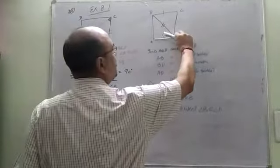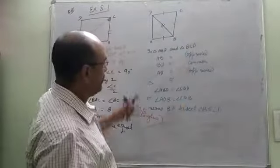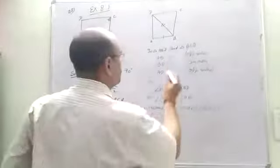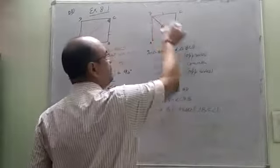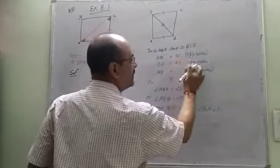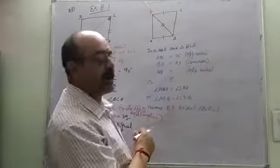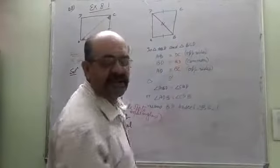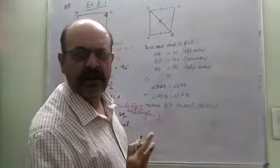Don't you think this ABD is equal to DC? AB is equal to DC? Why? Because opposite sides are equal. BD is equal to BD. It is common. And AD is equal to BC. Opposite sides of a rectangle or a square are equal.